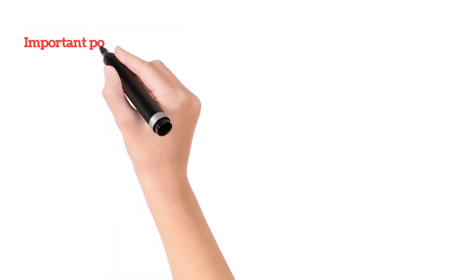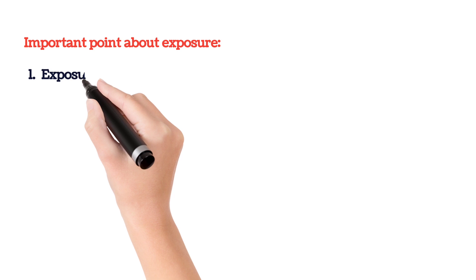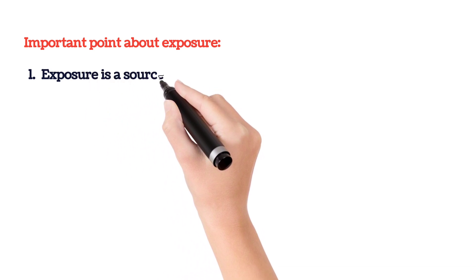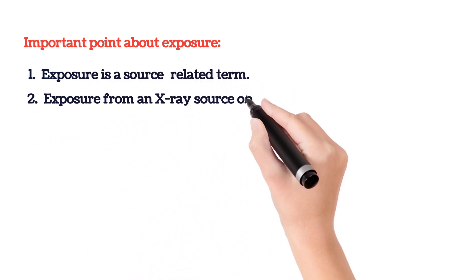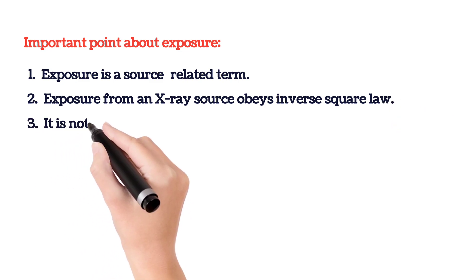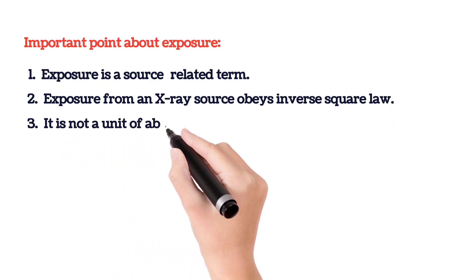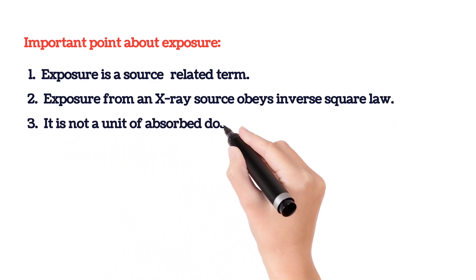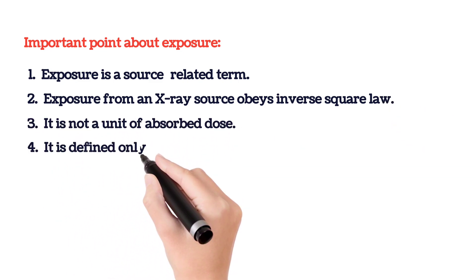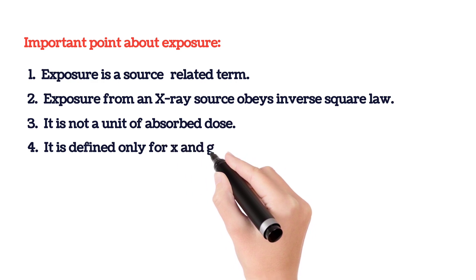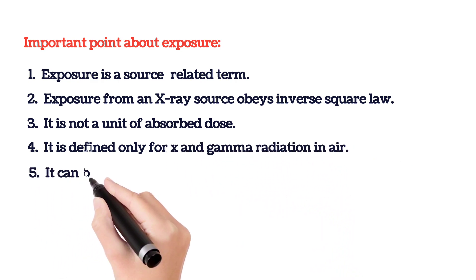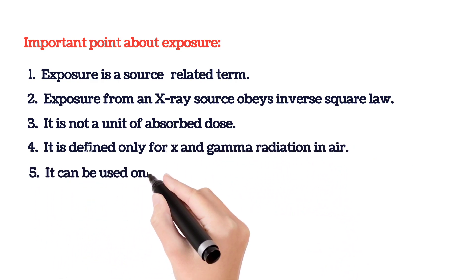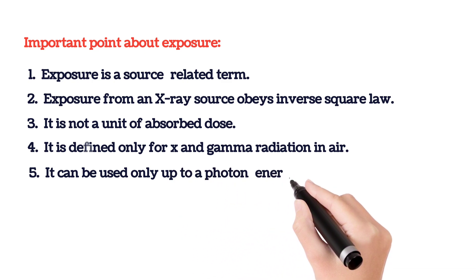These are important points about exposure. Exposure is a source-related term. Exposure from an X-ray source obeys the inverse square law. It is not a unit of absorbed dose. It is defined only for X-ray and gamma radiation in air, and it can be used only up to a photon energy of 3 mega electron volts.